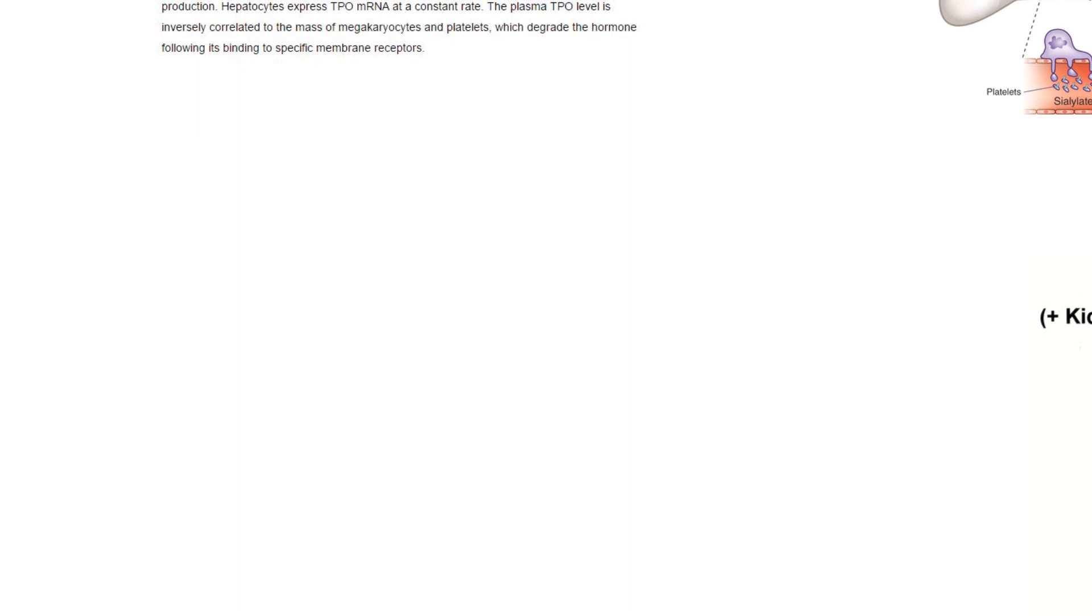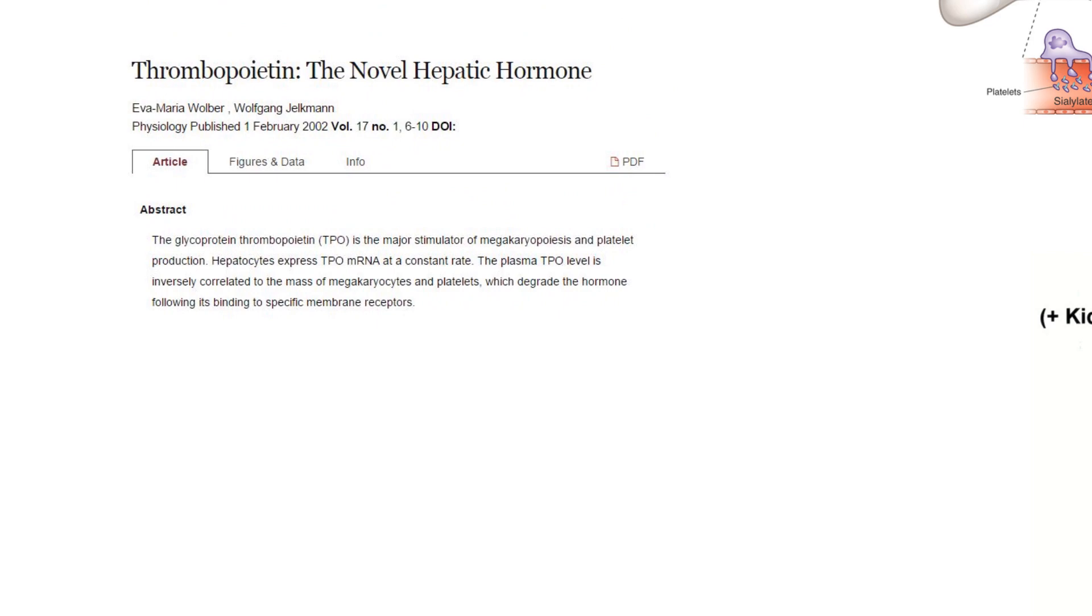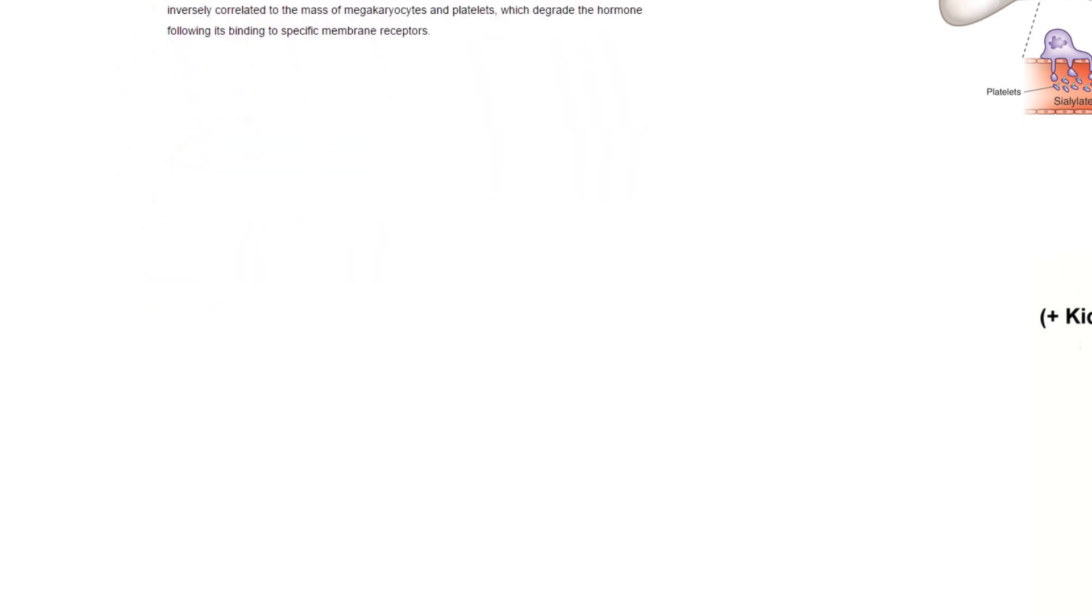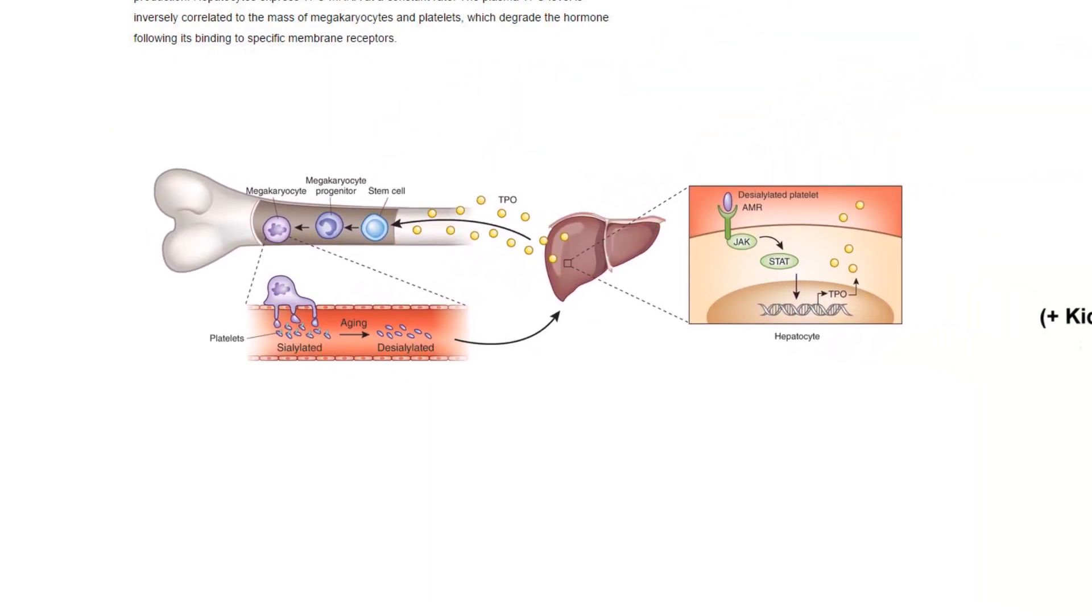We're going to talk about thrombopoietin. I found this neat little article: Thrombopoietin, the novel hepatic hormone. Whenever you see hepatic, that's an adjective meaning liver. It's from 2002, not that long ago, relatively speaking. It talks about the functions of thrombopoietin, including platelets and megakaryocytes. Megakaryocytes, mega meaning large, very large cells that little parts of that cell get pinched off, and those little pinched off parts are called platelets.